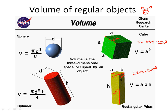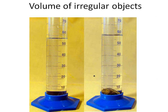But if it's not a regular object — like for example, let's say you have a rock — it doesn't have a formula to find its volume. What do you do? Well, there's an easy way we can do this. We can actually use a graduated cylinder to measure its volume. So if you're trying to find volumes of liquids or irregular objects, you can use a graduated cylinder to figure it out.